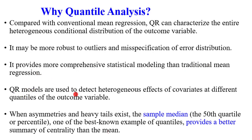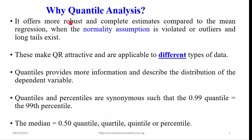QR models are used to detect heterogeneous effects of covariates at different quantiles of the outcome variable. When asymmetries and heavy tails exist, the sample median — which is the 50th percentile — is one of the best examples of quantiles, because it provides a better summary of centrality than the mean. QR offers more robust and complete estimates compared to mean regression when the normality assumption is violated, there are outliers, or long tails exist. These attributes make QR modeling attractive and applicable to different types of data.